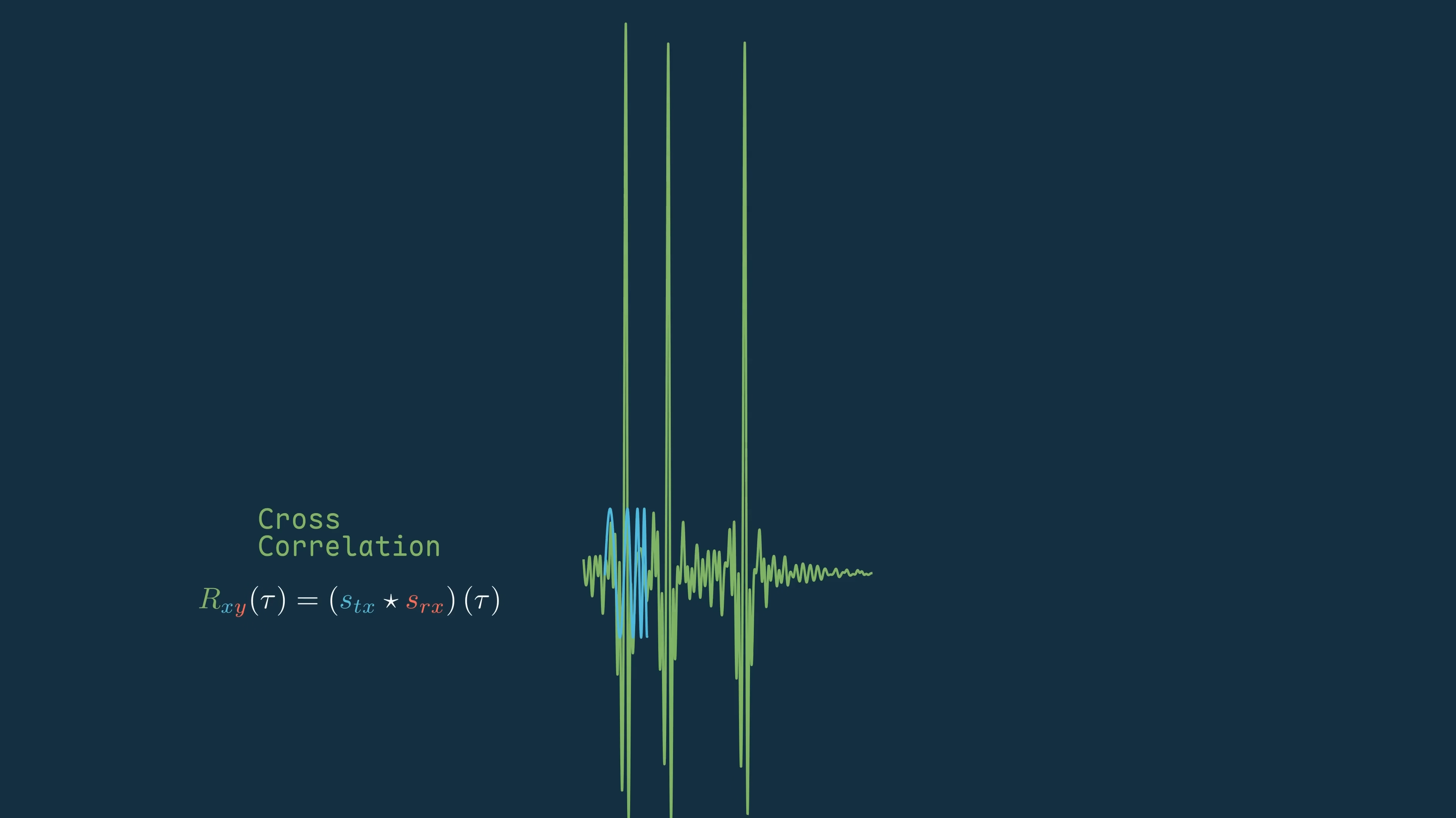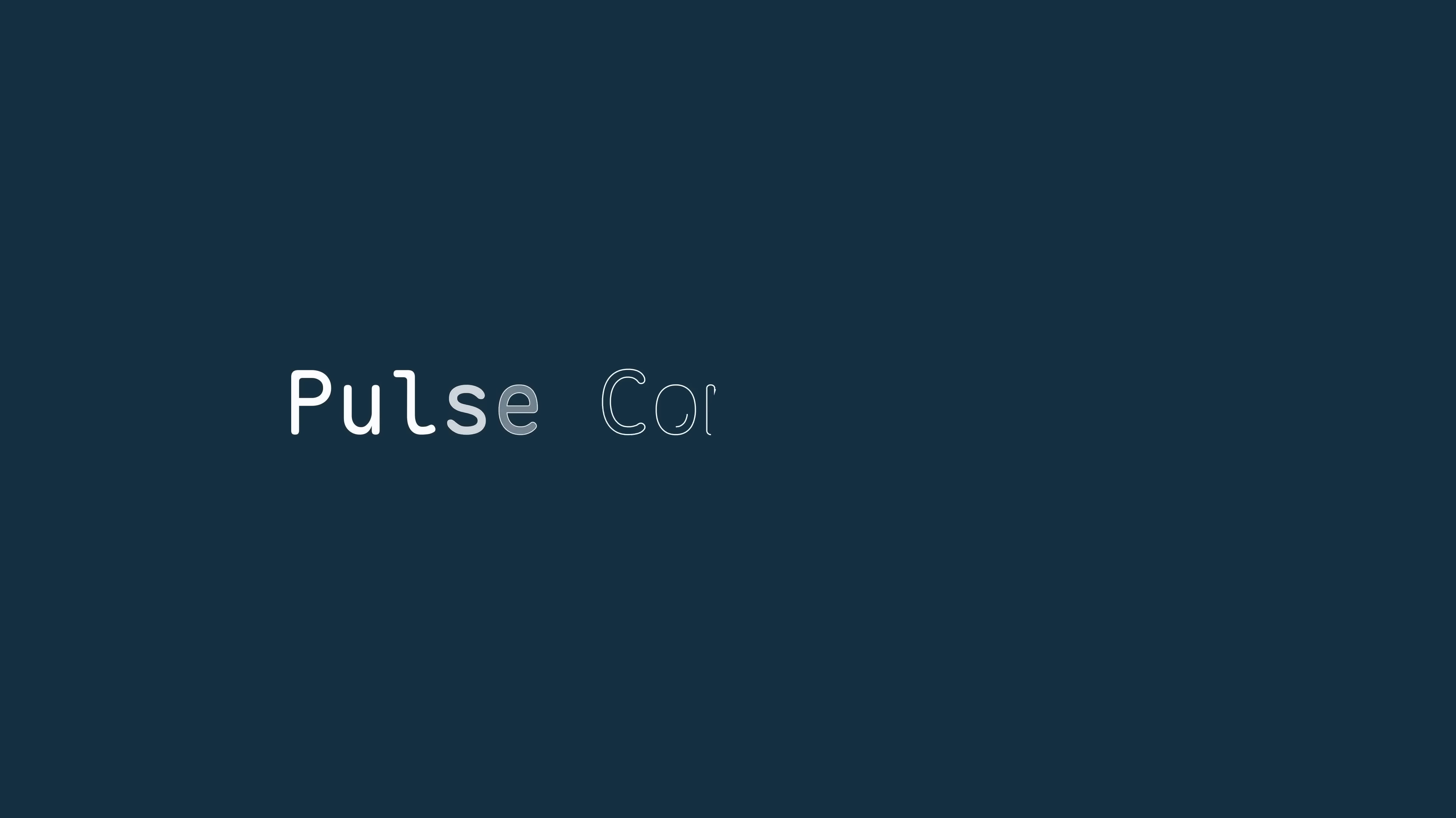So we're getting these super thin peaks, but they originate from this much wider pulse of energy. And since the energy has to go somewhere, these wide pulses are getting compressed into a thin peak, making the amplitude much higher than before. Hence the name pulse, compression.